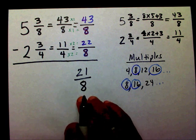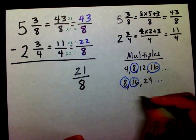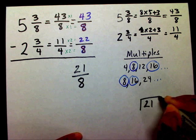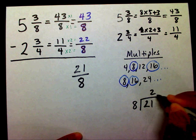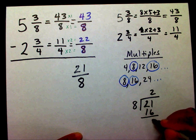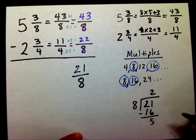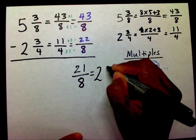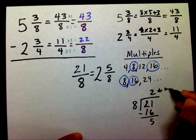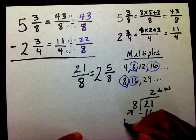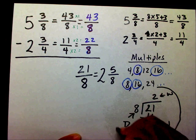I know that this is an improper fraction, so I need to change it to a mixed number. I'm going to divide: 21 divided by 8. 8 goes into 21 two times, that's 16. Subtract, and that gives me 5. So my final answer is 2 and 5 eighths. This is my whole number, this is my numerator, and that's my denominator. I tell students: go around the clock.